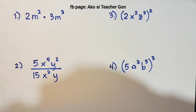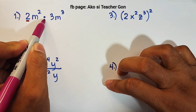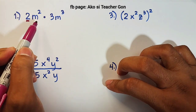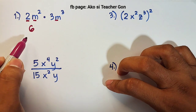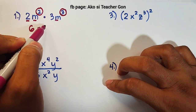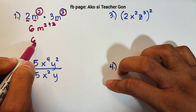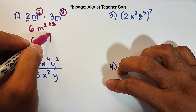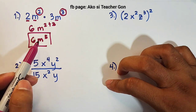Let us start with 2m squared times 3m cubed. First, we multiply the numbers: 2 times 3 gives us 6. For the variables, we have variable m with exponents m squared and m cubed. We copy the variable m and then add the exponents 2 and 3. So 2 plus 3 equals 5. Therefore, 2m squared times 3m cubed is simply 6m raised to the fifth power.